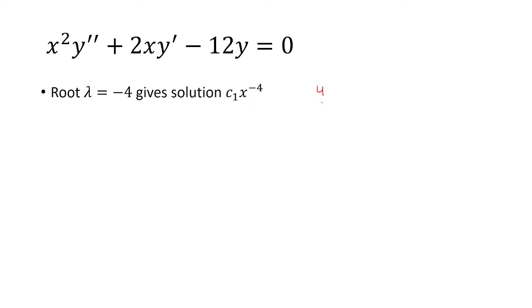We said that y was equal to x to the lambda. So when lambda is negative 4, we just plug in lambda equals negative 4 into this equation. And we also have a constant in front of it. Similarly, with lambda equals 3, that becomes the exponent, and we have a constant in front.